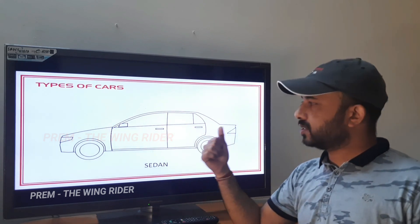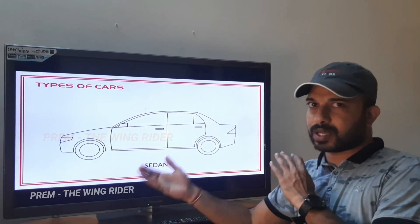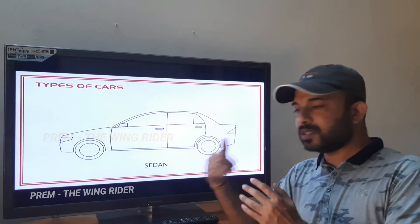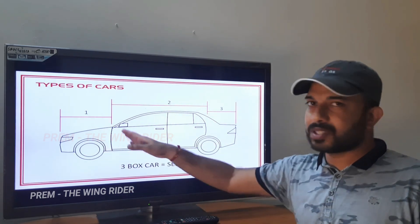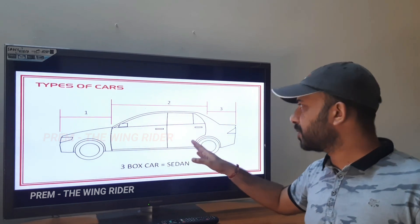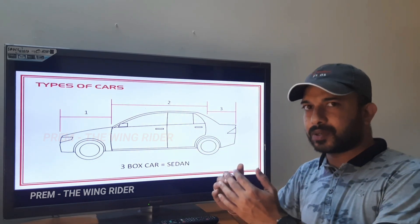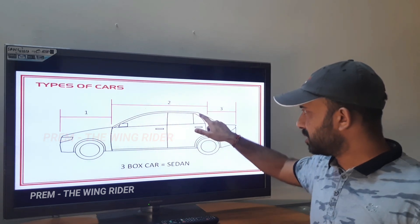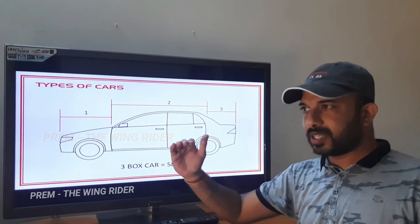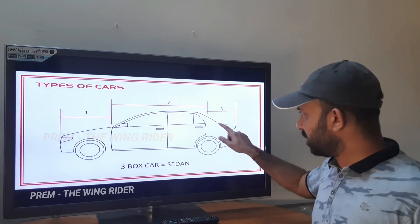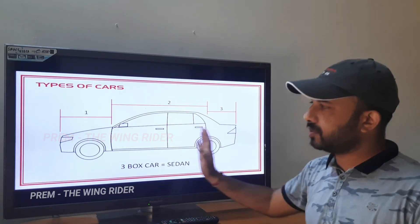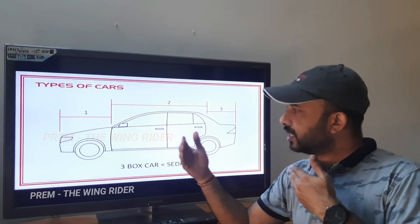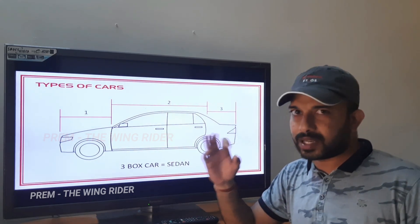Next is the sedan — a three-box car. The first box is the engine compartment, the second is the passenger compartment, and the third is the separate cargo area. The roof is straight, there is a windshield decline at the top, and the boot lid is horizontal. The sedan is a longer vehicle — hatchback is under 4 meters, while a true sedan design is 4 meters and above.